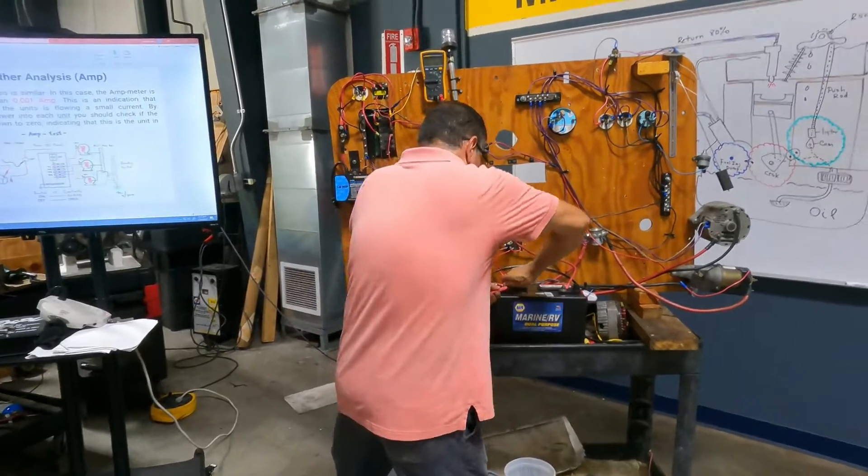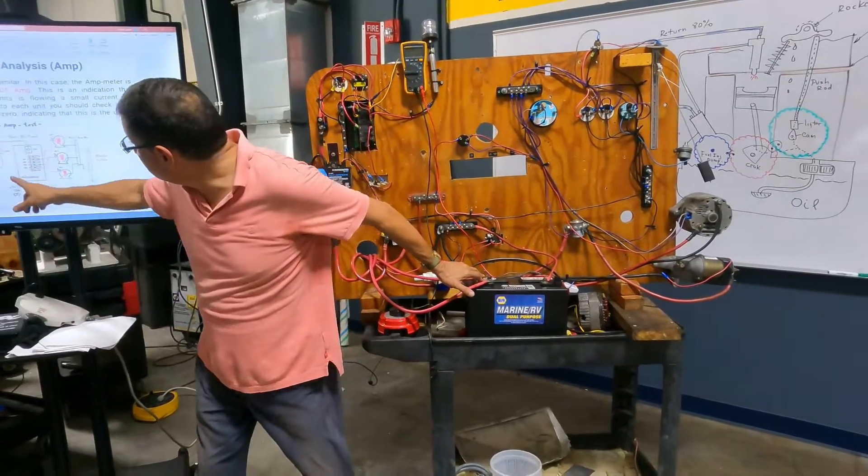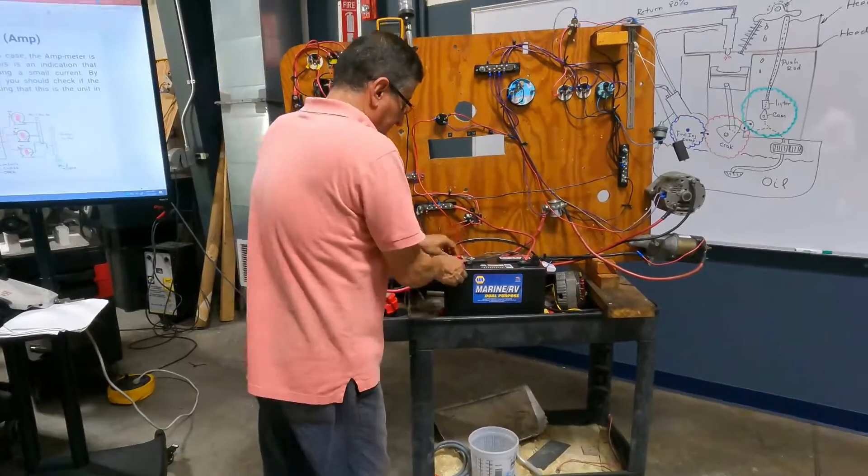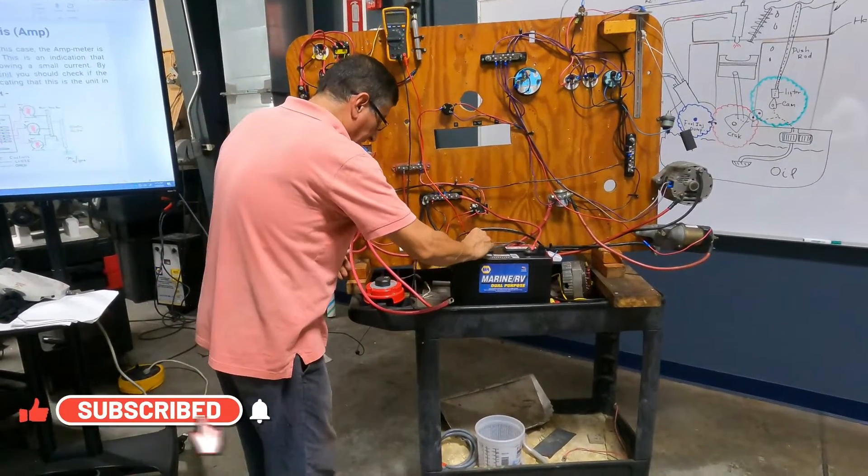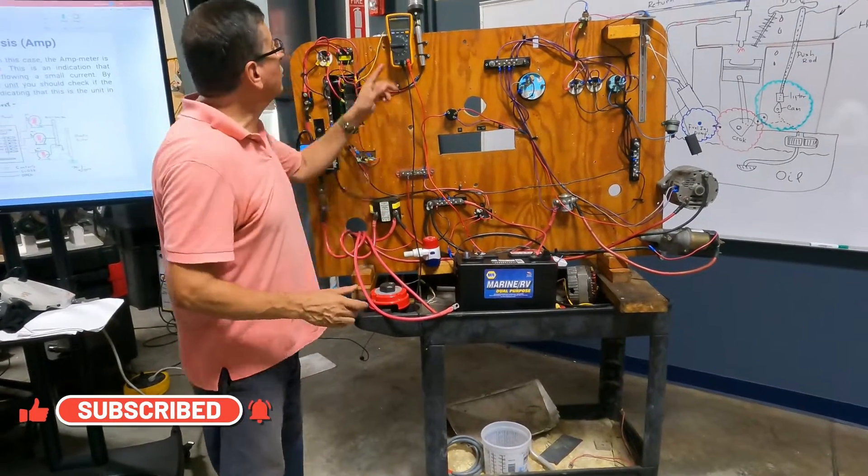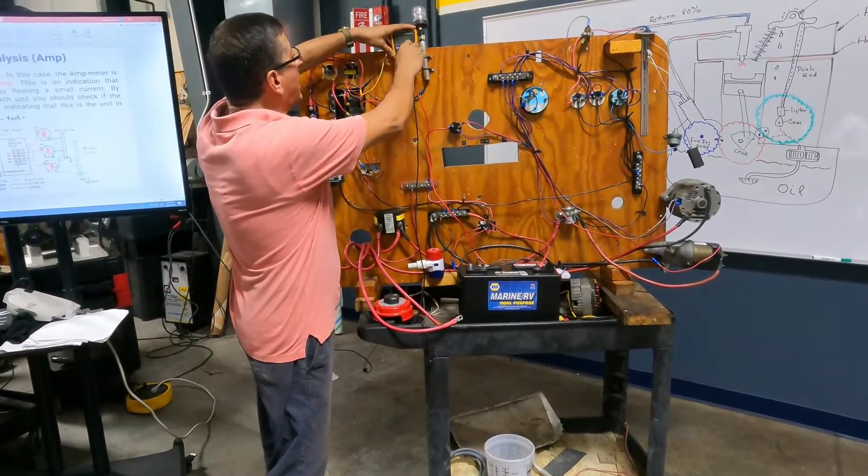I am going to disconnect here my positive. Everything is off. I put it back the positive here and I am going to connect my multimeter in amps.